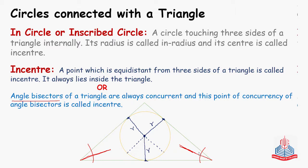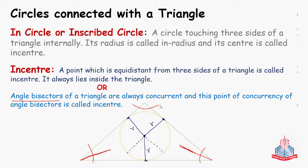If you remember, in practical geometry, when you learned to draw an in-circle, you first drew a triangle, and then to find the in-center, you drew all three angle bisectors using a compass. Where those angle bisectors intersected, you made that point the center and drew the circle — that is how the in-circle was drawn. So, both these definitions must be remembered.